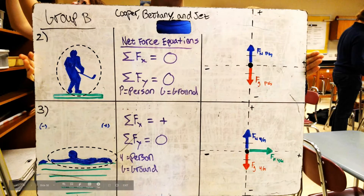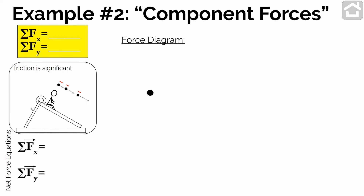Up to this point in class, we've talked about drawing force diagrams for objects which are either at rest or moving on level ground. The question is, how do we draw or think about force diagrams for objects which are either at rest or moving on non-level ground? Let's look at a situation where someone is sliding down a slide or an inclined surface.